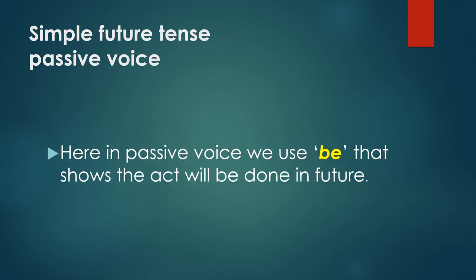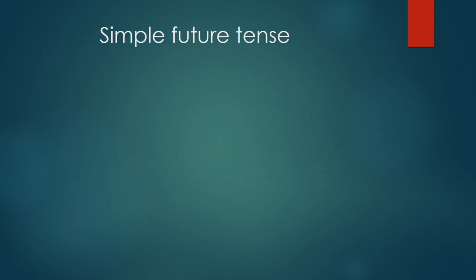Here in passive voice we use 'will be', which shows the act will be done in future. In passive voice in simple future tense, 'will be' plus past participle is used — yeh batata hai ki yeh act bavishya mein kiya jaye ga. Now we shall see some examples of simple future tense.